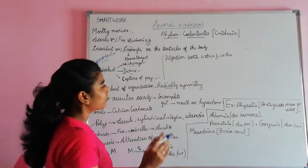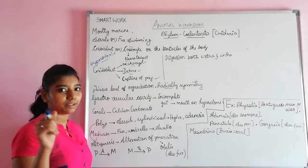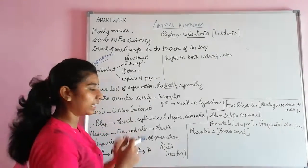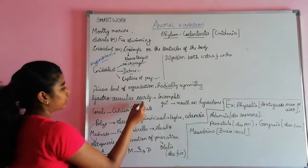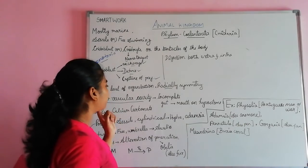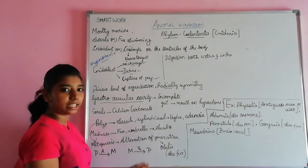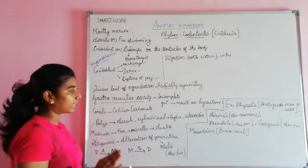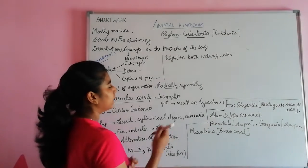The next characteristic is they are radially symmetrical. An important feature of phylum Coelenterata is they have a gastrovascular cavity, which helps in digestion.